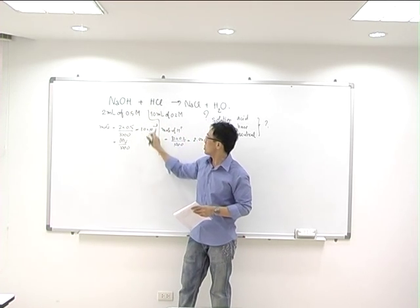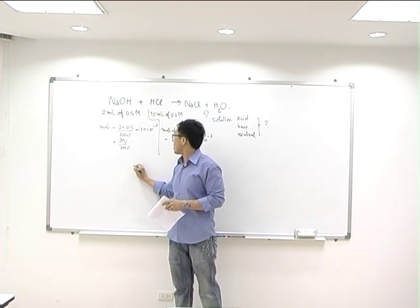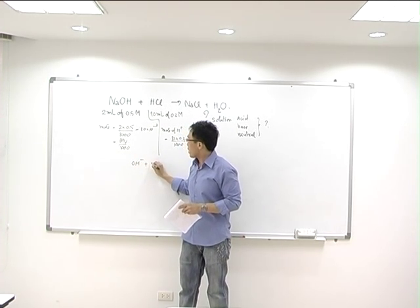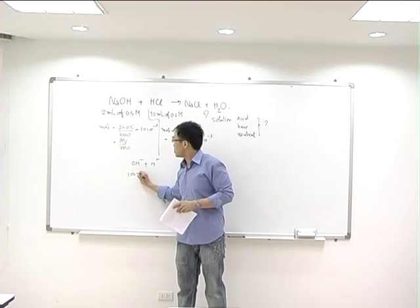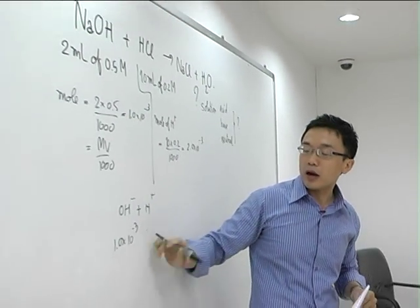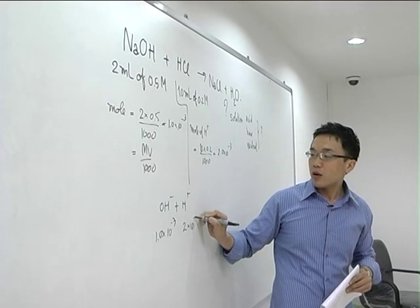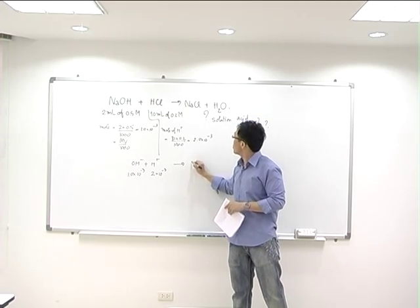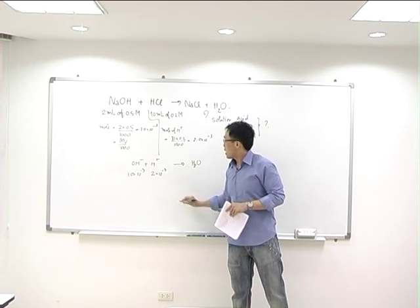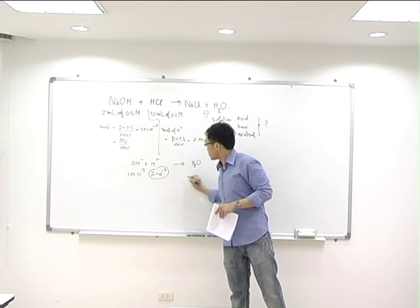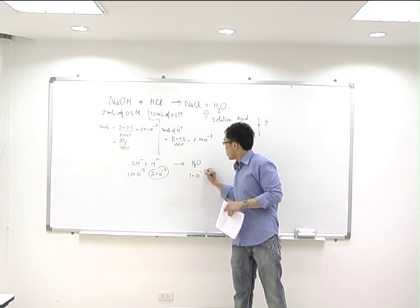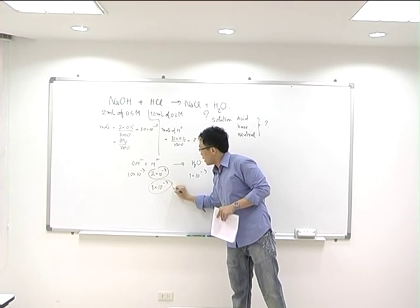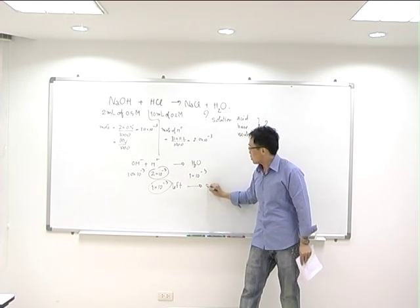Basically, we have OH- react with proton. So 1 times 10 power minus 3 reacts with 2 times 10 power of minus 3. This will give water, which means at the end, the reaction will have only proton left over.